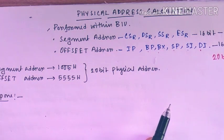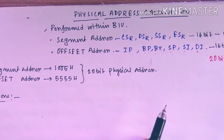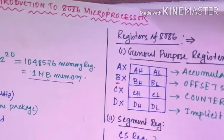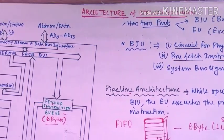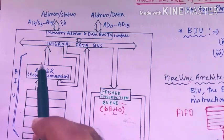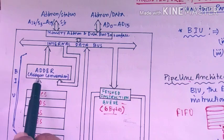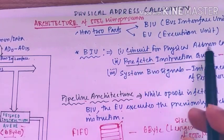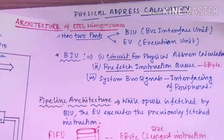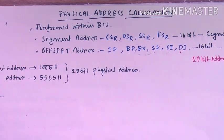Hello everyone, welcome. Today in this video we will try to explain how the physical address is calculated in case of the 8086 microprocessor. In the previous video where we explained about the architecture of the 8086 microprocessor, we know that the Bus Interface Unit holds a particular circuit arrangement responsible for calculation of physical address. The circuit for physical address calculation is available in the BIU.